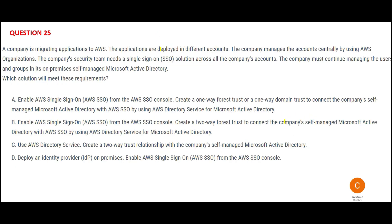This question is about SSO. They have Active Directory on-premises, and the SSO from AWS should use this Active Directory. The company manages accounts centrally across different accounts. The first option says you use the SSO console and create a one-way forest trust. One-way is correct because the requirement says they want to continue using their on-premises self-managed Active Directory. Two-way would mean you can also work through the Active Directory in your cloud environment, so two-way will not work given this requirement.